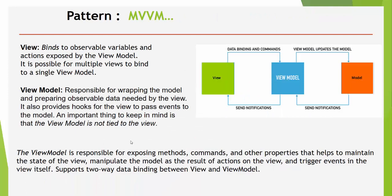So this is my introduction to the philosophy of the MVVM pattern. The View binds to observable variables and actions exposed by the ViewModel. It is possible for multiple Views to bind to a single ViewModel. The ViewModel is responsible for wrapping the Model and preparing observable data needed for the View. It also provides hooks for the View and passes data events to the Model. The Model is responsible for exposing methods, commands, and other properties that help maintain the state of the View, manipulate the Model as a result of actions on the View, and trigger events in the View itself.